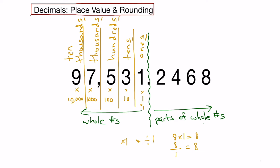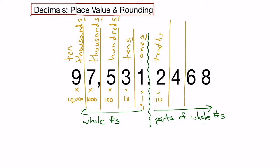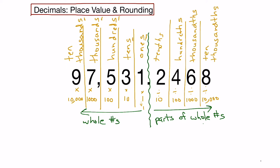So the next one over: going to the left we multiply by ten, so going right we divide by ten. We place that decimal digit in its own column, and we call this the tenths column. Continuing to the right, the next column is divide by 100, which is the hundredths column. Then divide by 1,000, which is the thousandths column. And then divide by 10,000, which is the ten-thousandths column, and so on.